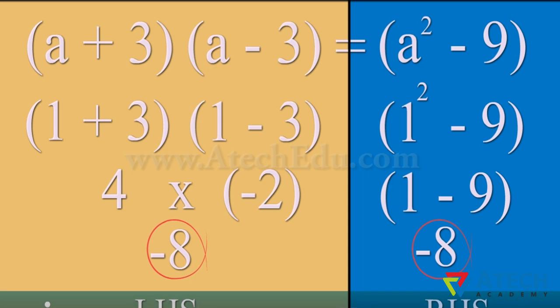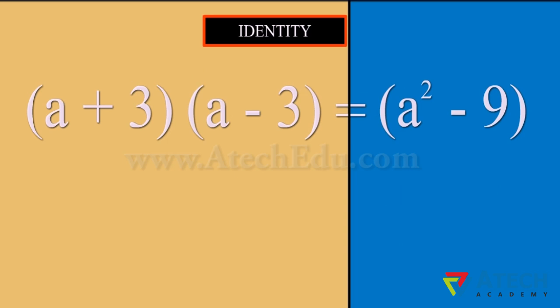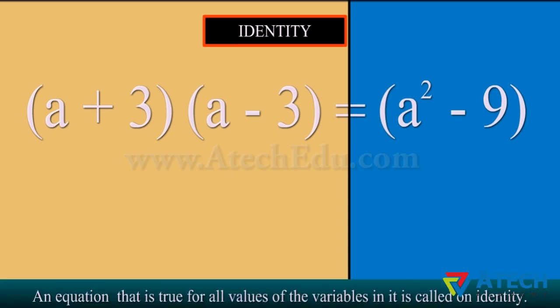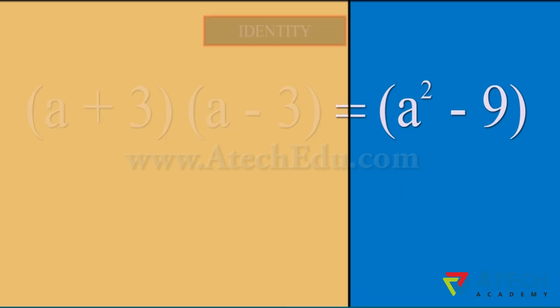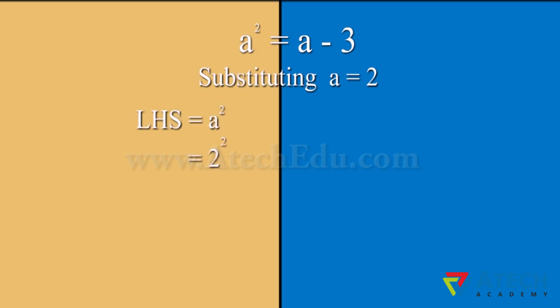In fact, for any value of A, this equation will have LHS equal to RHS. Hence, this equation is an identity. An equation that is true for all values of the variables in it is called an identity. Let us take another example and check if it is an identity.